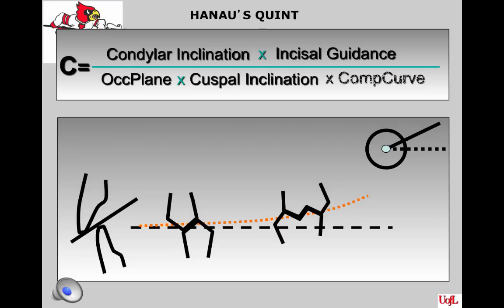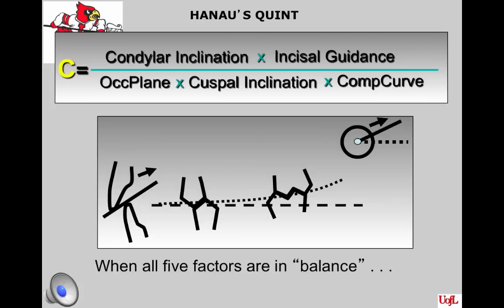The compensating curve is the anterior-posterior curving in the medial plane and the medial-lateral curving in the frontal plane within the alignment of the occluding surfaces and incisal edges of the artificial teeth, used to develop balanced occlusion for complete dentures. It is in a way a blend of the curve of Wilson and the curve of Spee, and is only designated in complete denture occlusal schemes. When all five factors are in balance, the result is C, representing balanced occlusion.